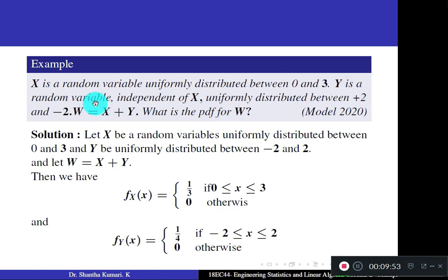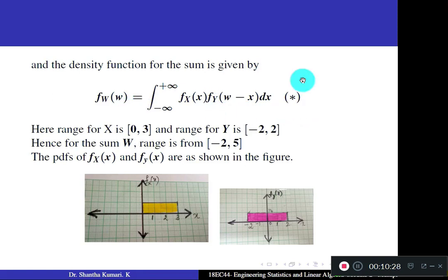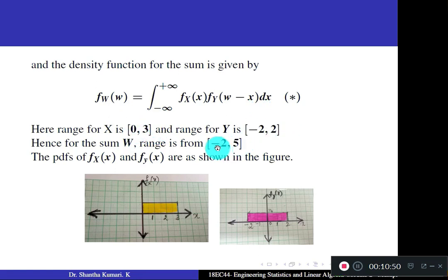For y, uniformly distributed between −2 and 2, the PDF is fy(y) = 1/(2−(−2)) = 1/4, and 0 otherwise. The range for x is 0 to 3, and the range for y is −2 to 2. Hence the range for w will be −2 to 5 (add lower limits: 0+(−2) = −2; add upper limits: 3+2 = 5). Now draw the PDFs: fx has amplitude 1/3 on [0,3], and fy has amplitude 1/4 on [−2,2].